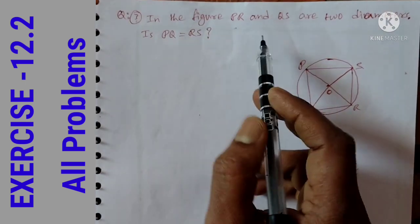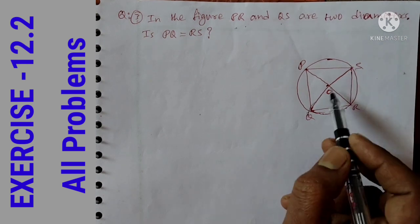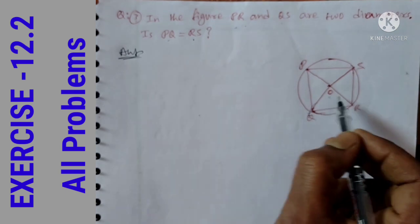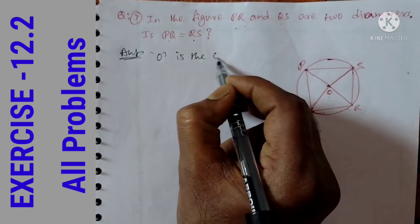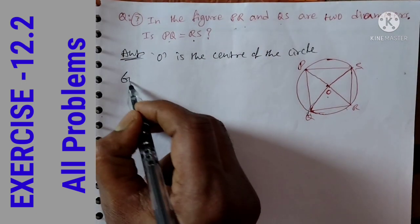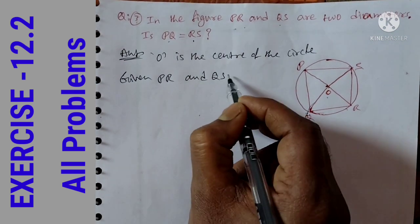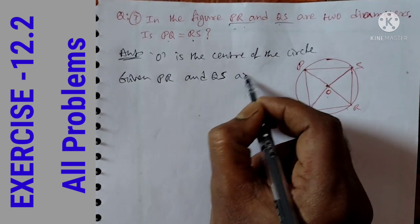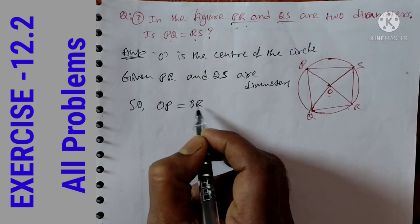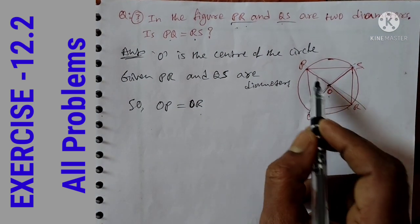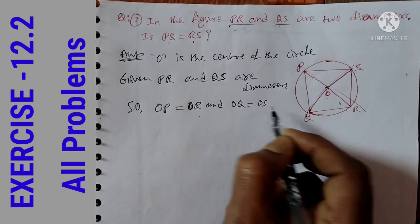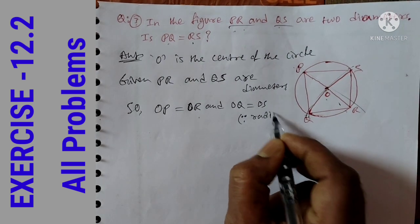Question number 3: In the figure, PR and QS are two diameters, O is the center. Prove that PQ is equal to RS. O is the center of the circle. Since all are radii, the radii are equal.